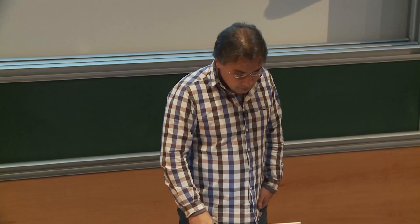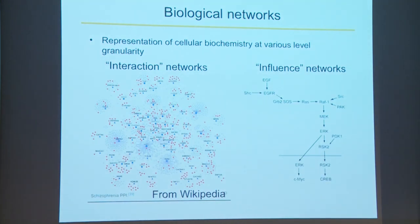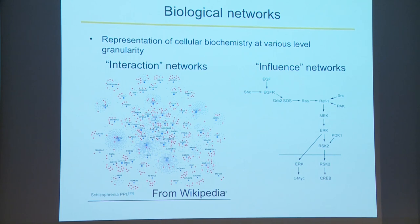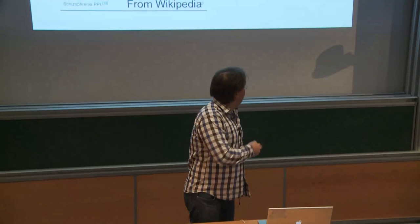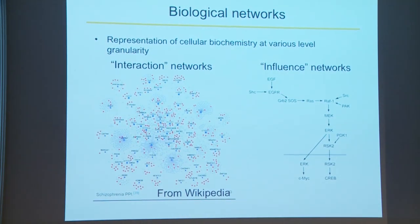To be pragmatic, people simplify enormously the structure of biochemical reaction networks into simple graphs. One very simplistic representation is an undirected graph — here it's a schizophrenia protein-protein interaction network, where each node is a protein and a link describes the fact of physical interaction between two proteins. If two proteins interact, it means this interaction was selected by evolution and probably serves a certain purpose inside the cell. Large networks like these are called protein-protein interaction networks.